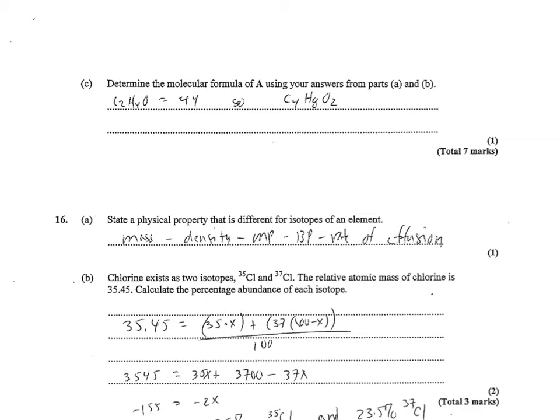So the molecular formula, using your answers from part A and part B, since the actual mass was just found to be right around 88, and the mass of the empirical formula is 44, that means I would have to double the empirical formula to C4H8O2.